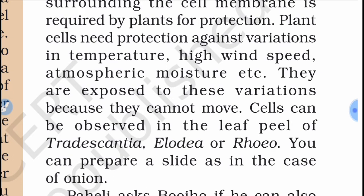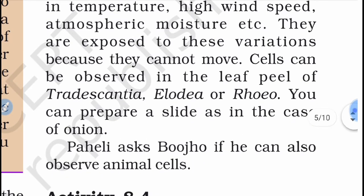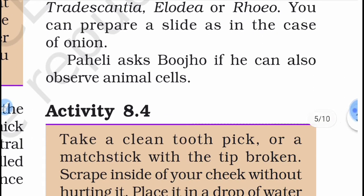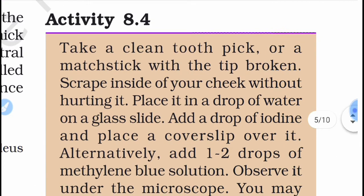Cells can also be observed in the leaf peel of Tradescantia, Elodea, or Rhoeo. You can prepare a slide as in the case of onion. Now the question arises: can we also observe animal cells?